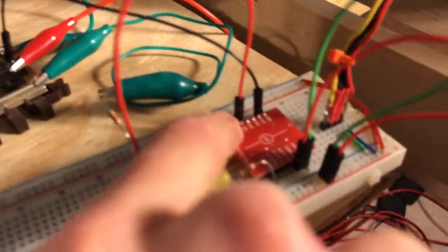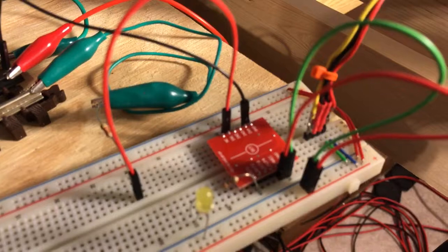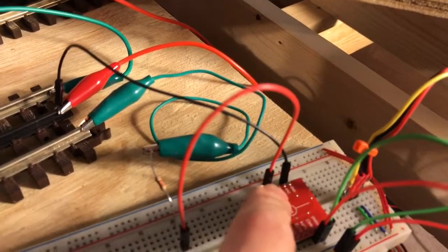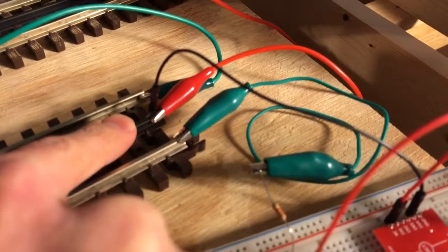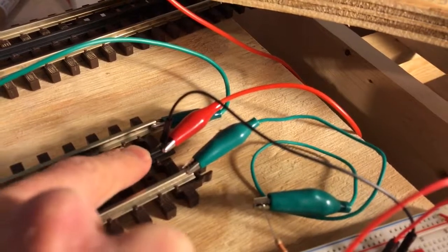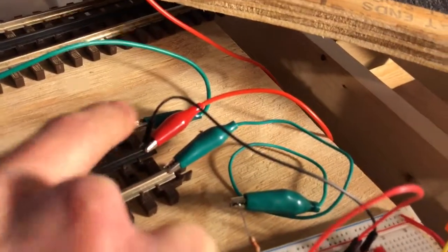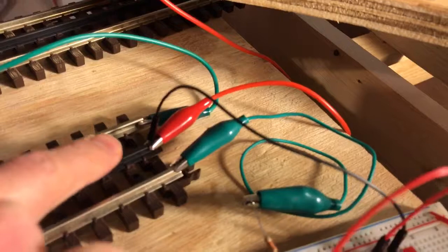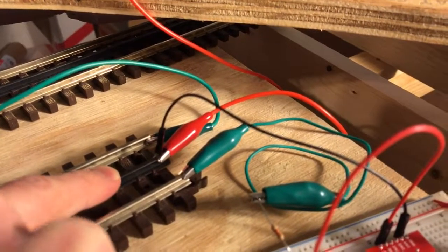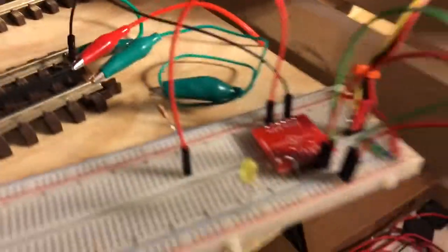That's coming directly into input number one here on the optical isolator board. Then I've got the black line connected to the ground input, which I've tied to the center rail. Now typically you'd consider the center rail to be hot, but since it's AC I don't really think it matters. I'm sure somebody who knows better may correct me on that.